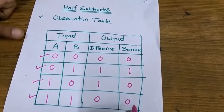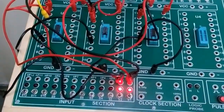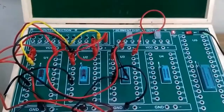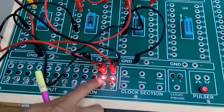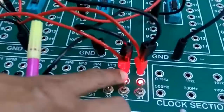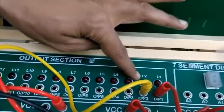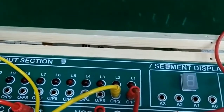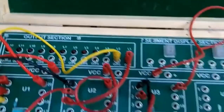Thus you can perform the half adder as well as the half subtractor circuit using this trainer kit. The input section provides inputs to the gates; by turning the switches to OFF or ON you can change the inputs. Outputs are observed on the LEDs: LED OFF indicates output zero and LED ON indicates output one. Thank you.